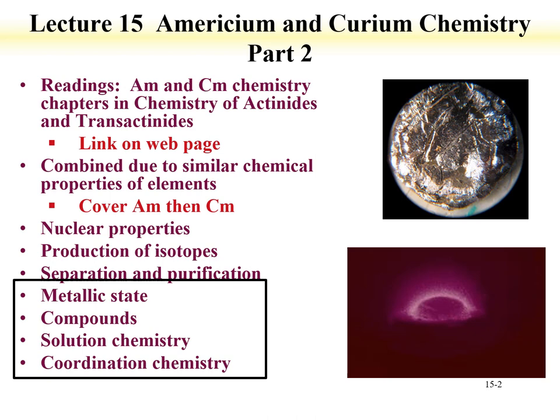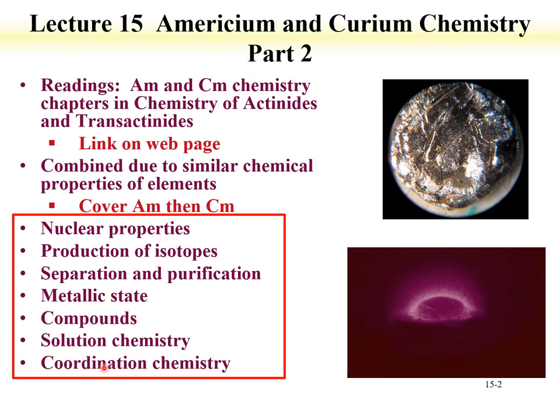We'll then move on to discuss the nuclear properties, production, metallic state compounds, and solution chemistry of curium. Here we have an example of curium — it's glowing. The glow is an indication of which isotope this curium compound is. The longer-lived isotopes, like curium-248 or 246, would not have this glow. But a short-lived isotope like the 18-year curium-244 would. So we know this is a compound of curium-244.